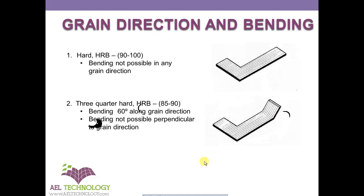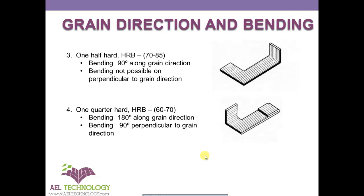Next is one half hard, that's HRB 70 to 85. In this type of material, along the grain direction it's possible to bend 90 degrees, and it's impossible to bend perpendicular to the grain direction.